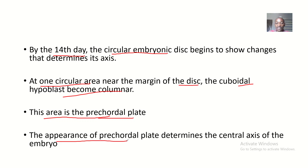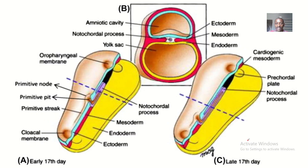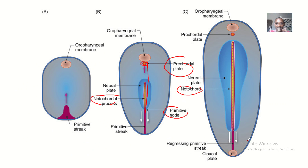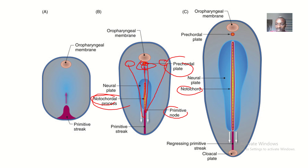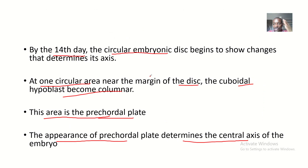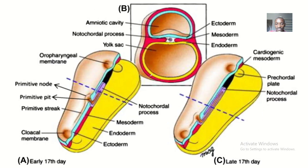The appearance of the pre-cordial plate determines the central axis of the embryo. The notochordial process is growing toward the pre-cordial plate. So if the pre-cordial plate is on one side, then the notochordial process will grow toward that side. Where the pre-cordial plate develops determines the central axis of the embryo.